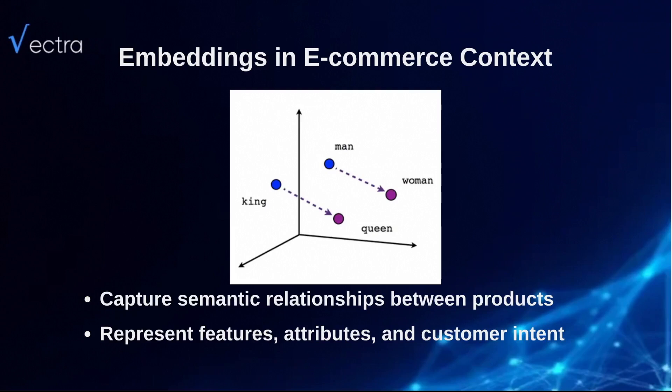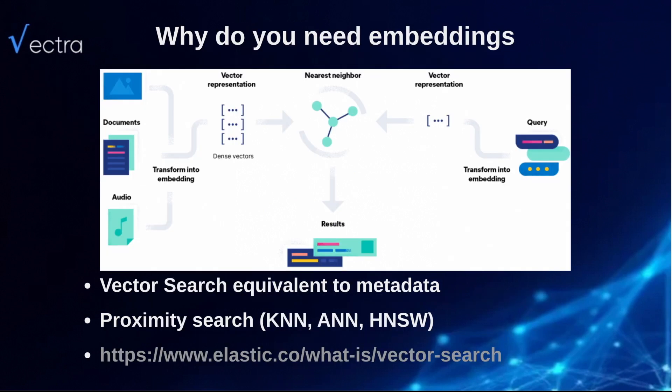You've probably all heard about KNN or HNSW search — this is what it does. Here's a little bit of how it works inside Elastic for vector search. If you want to read more about it, there's a URL on Elastic's website telling you exactly what's going on inside the search engine.